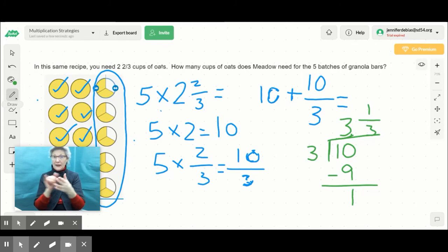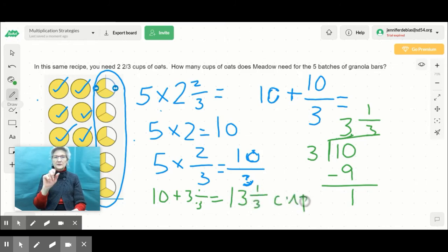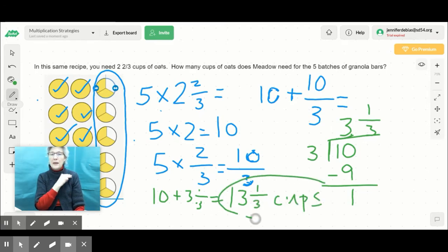That's much easier for me to work with, so I'm going to write down here, 10 plus 3 and 1/3. Well, 10 plus 3, I'm going to use my whole numbers first. 10 plus 3 is 13 and 1/3 cups. So I know that Meadow needs 13 and 1/3 cups of oats to make 5 batches of granola bars.